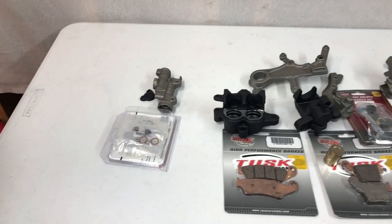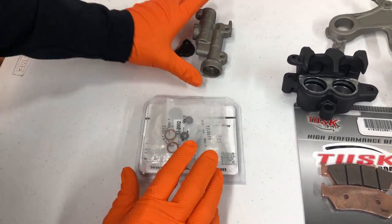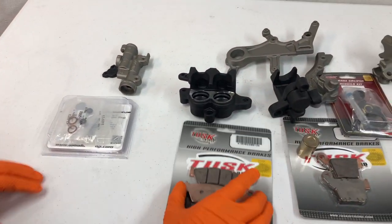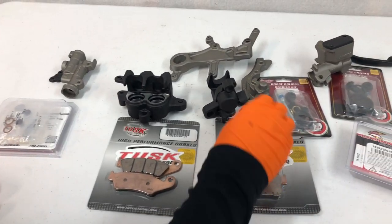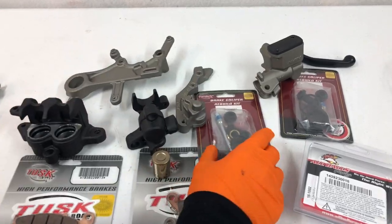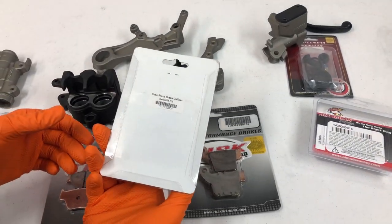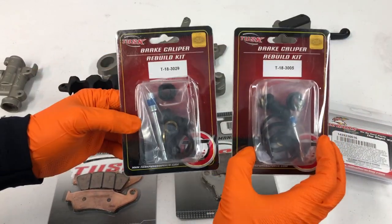Okay, so here's the braking components that we Cerakoted in the last video and here's a master cylinder kit for the rear brakes, a couple sets of brake pads and the piston for the rear brake caliper that I need to replace and then a caliper rebuild kit for the front brakes and then another one for the rear.